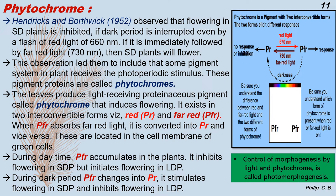Coming to phytochrome: Hendricks and Borthwick in 1952 observed that flowering in short day plants is inhibited if the dark period is interrupted, even by a flash of red light at 660 nanometers. However, if it is immediately followed by far red light at 730 nanometers, then short day plants will flower. This observation led them to conclude that some pigment system in the plant receives the photoperiodic stimulus. These pigment proteins are called phytochromes.